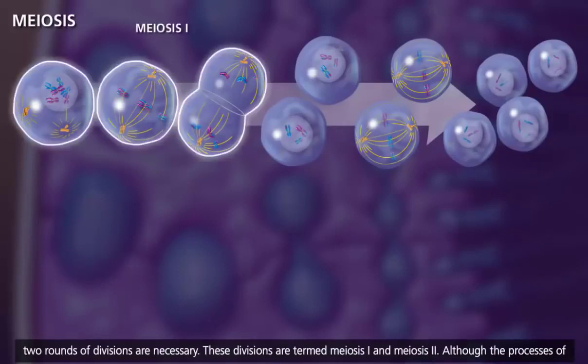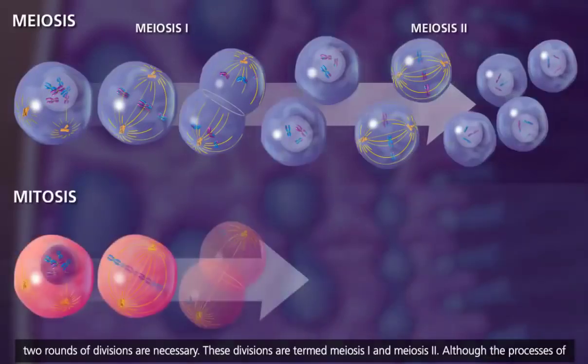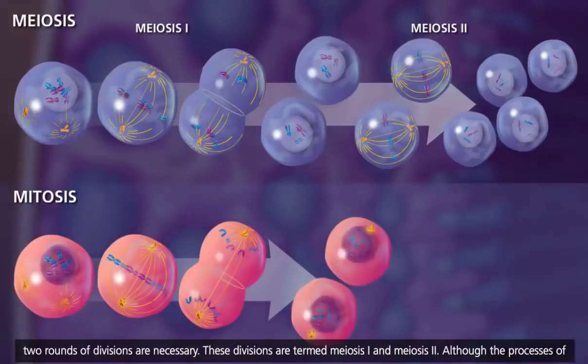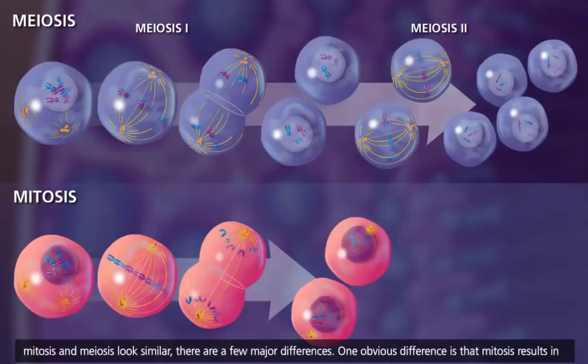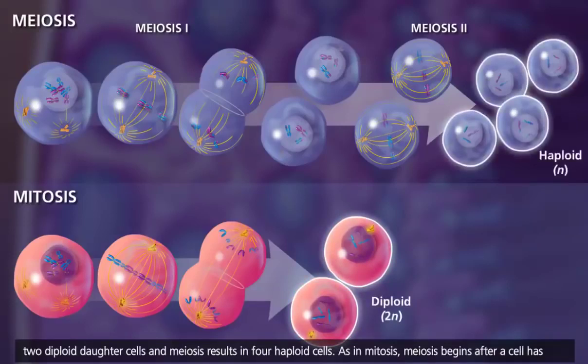These divisions are termed meiosis I and meiosis II. Although the processes of mitosis and meiosis look similar, there are a few major differences. One obvious difference is that mitosis results in two diploid daughter cells, and meiosis results in four haploid cells.